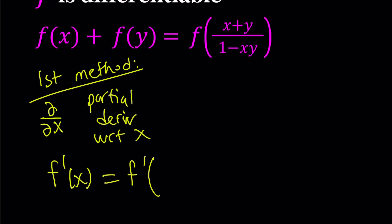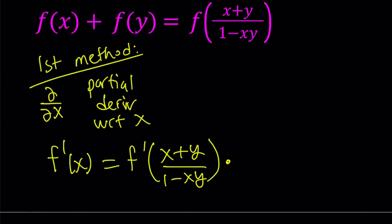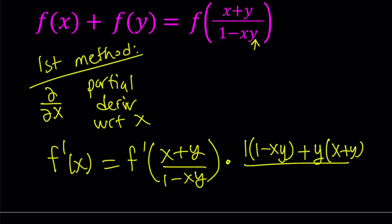It's going to be f prime of the quotient, multiplied by the derivative of the inside. The inside is a quotient, so I have to consider that. If you differentiate x plus y, the derivative of x is one, multiplied by one minus xy. Then it's going to be minus the derivative of one minus xy — since y is a constant, the derivative of negative xy is just negative y, so that's plus y times the first thing. All of that is divided by one minus xy quantity squared — we use the quotient rule here.